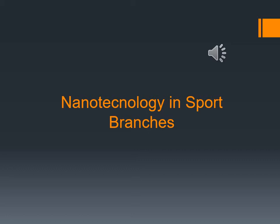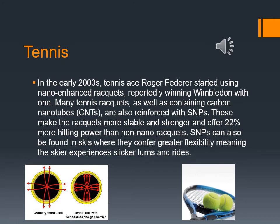Now we will examine nanotechnology in sports branches in detail. The first branch is tennis. In the early 2000s, tennis ace Roger Federer started using nano-enhanced rackets, reportedly winning Wimbledon with one. Tennis rackets containing carbon nanotubes are also reinforced with shape memory polymers (SMPs), making the rackets more stable and stronger, offering 22% more hitting power than non-nano rackets. SMPs can also be found in skis, where they confer greater flexibility, meaning the ski experiences slicker turns and rides.